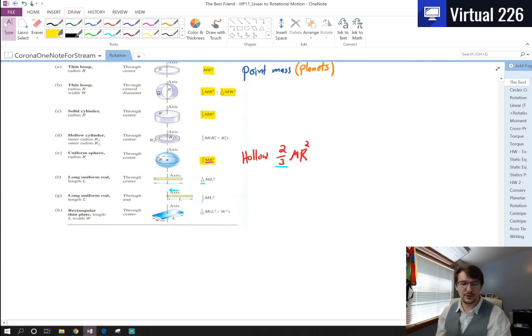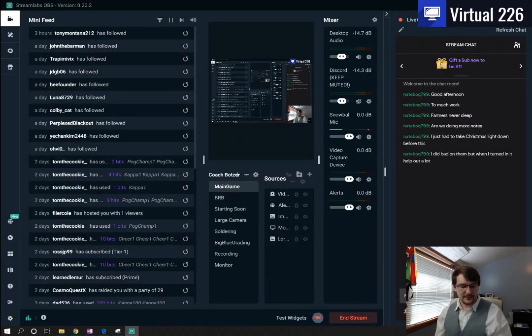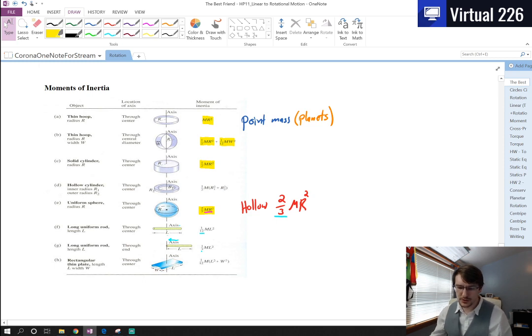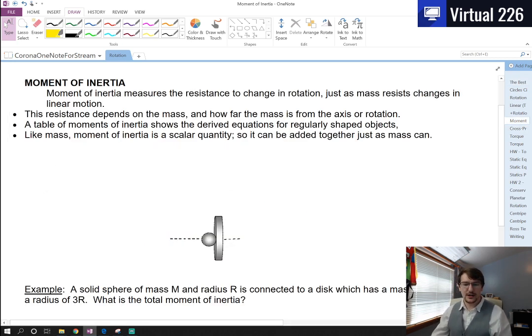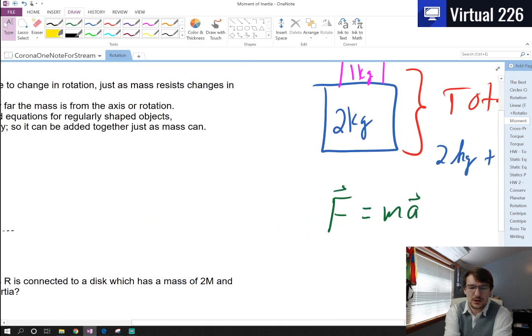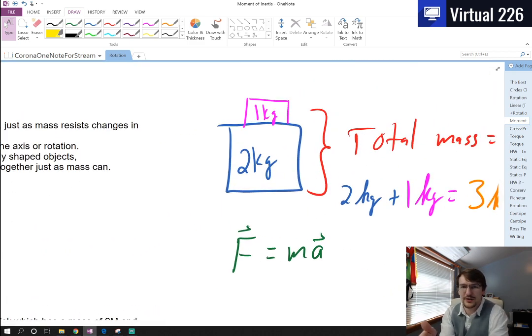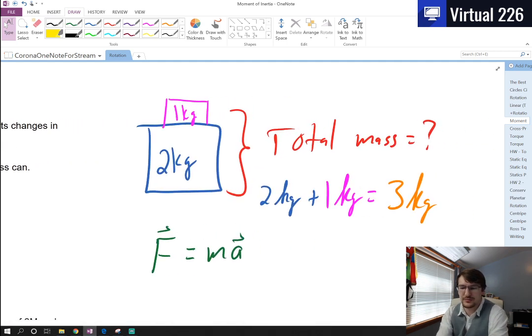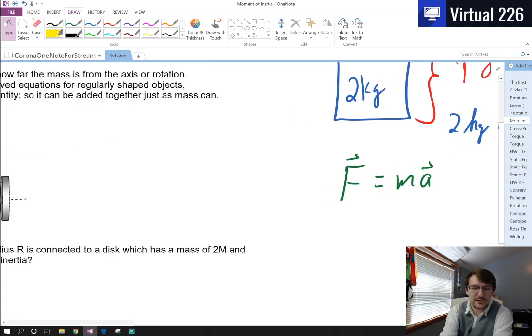We for the most part just look these up on a table. Now if we have two objects, such as a solid sphere and some disk or cylinder, those two different objects have two different moments of inertia. If we stuck those objects together, what would that new moment of inertia be? I don't want to do any calculus to figure that out.